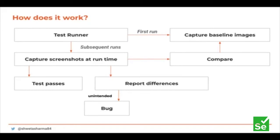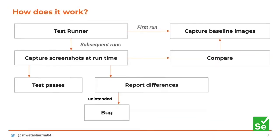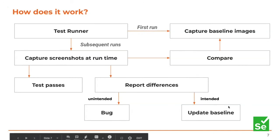When differences are reported, there are two possible outcomes: unintended differences — where the tool is highlighting something you did not expect — or intended differences, meaning your baseline image needs to be updated. For example, if your baseline image had a header screenshot without an 'add to cart' icon, but after feature development that icon was added, the tool will report the difference and you need to update the baseline.